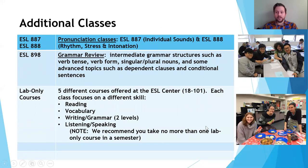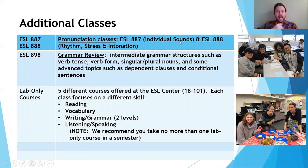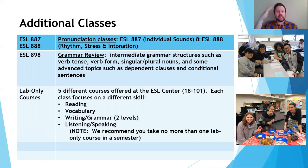We also offer classes in other skills outside of grammar and writing, reading and vocabulary, and listening and speaking. We offer two pronunciation classes: ESL 887 and ESL 888. ESL 887 is about the individual sounds of English — in this class you practice your vowel sounds and consonant sounds, learning the correct mouth position and the correct way to vocalize individual sounds. ESL 888 is about rhythm, stress, and intonation — putting those sounds together, understanding the rhythm and stress of English, and knowing when to raise or lower your voice.